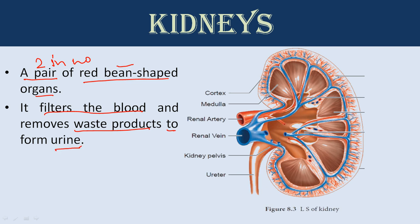Every kidney has three layers. The first is the cortex, the second is the medulla, and the third is the pelvis. The cortex is the outer layer, the medulla is the inner layer, and the pelvis takes urine out away from the kidney through the ureter.